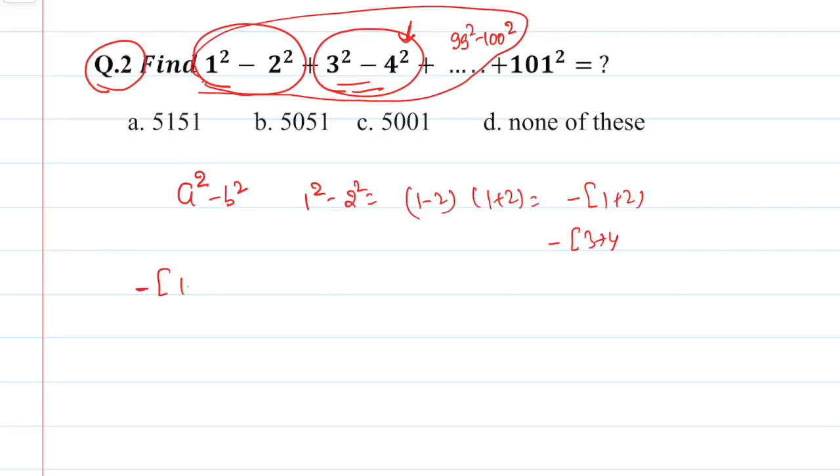then it will be left minus 1 plus 2, first pair, 3 plus 4, second pair, dot dot dot, up to 99 plus 100 is the last pair plus 101². So this is extra.